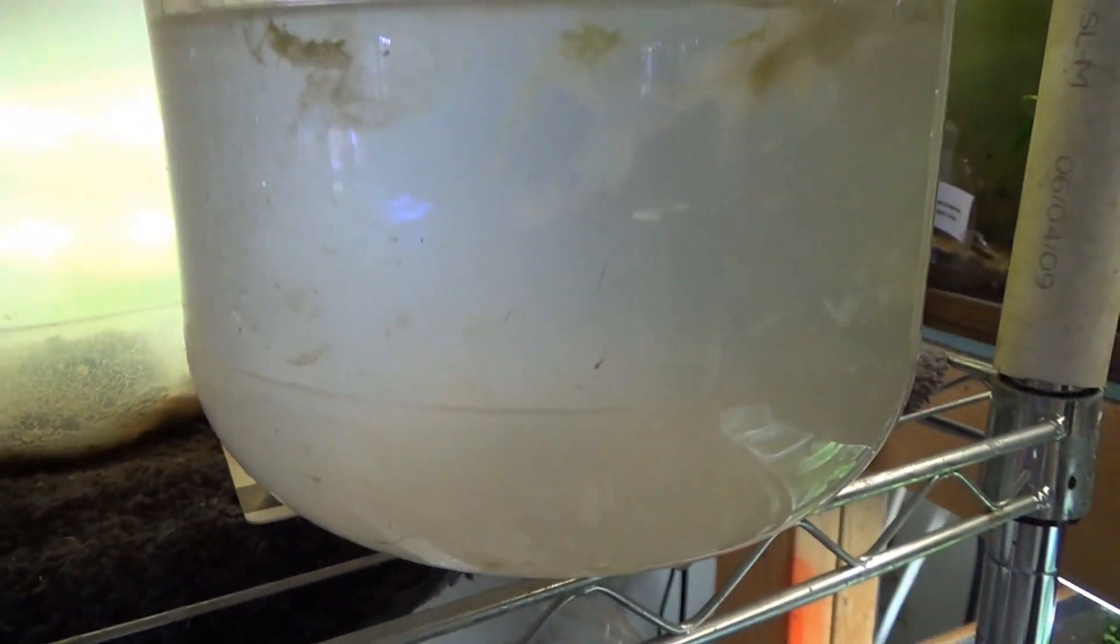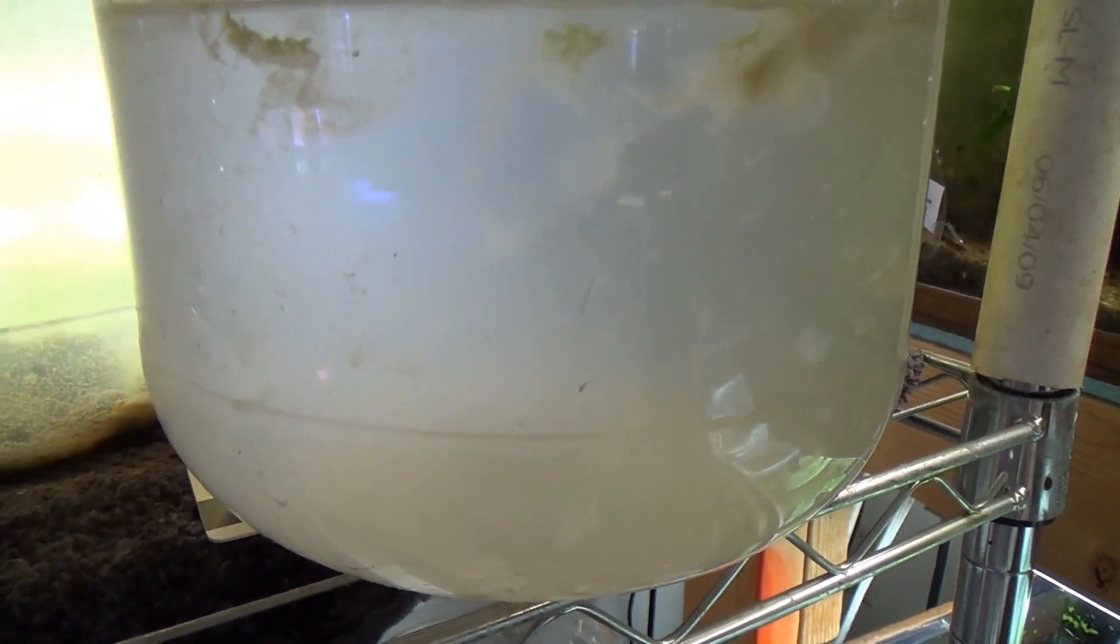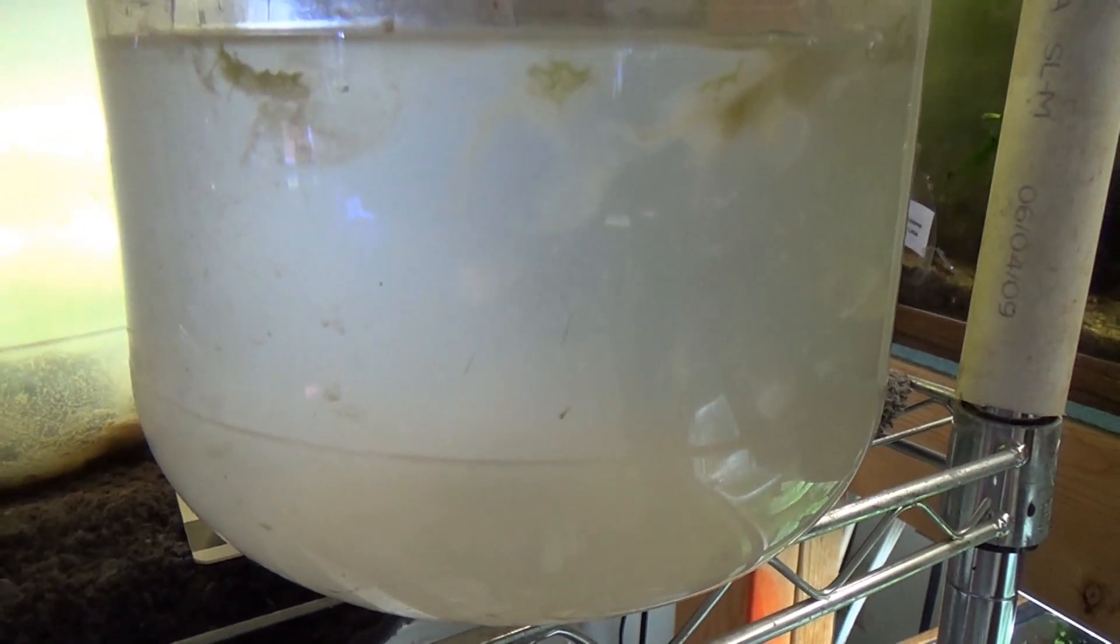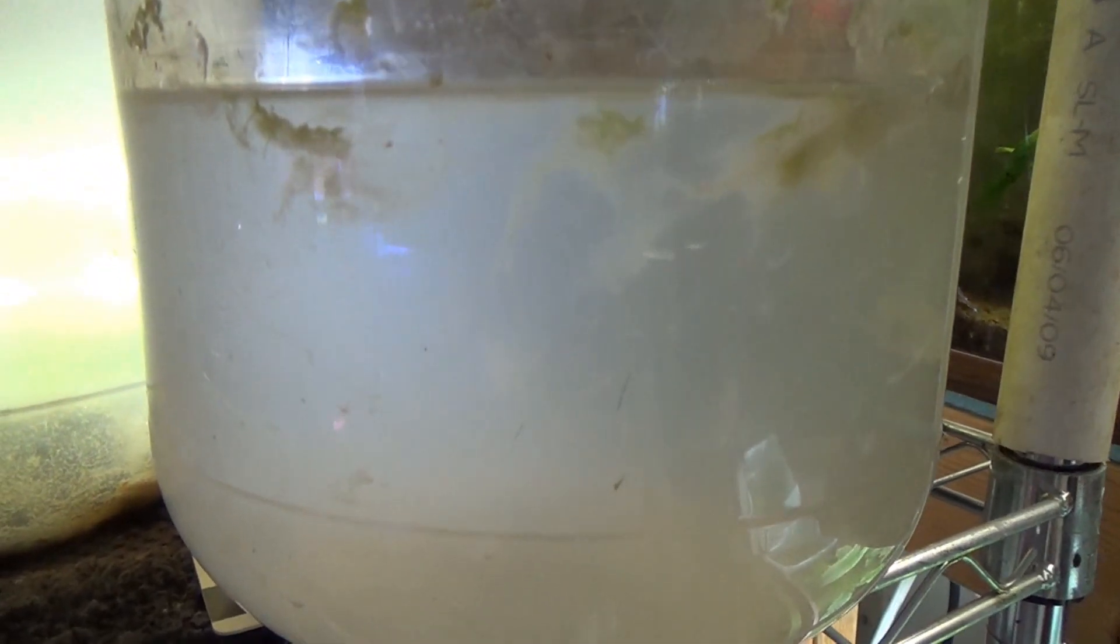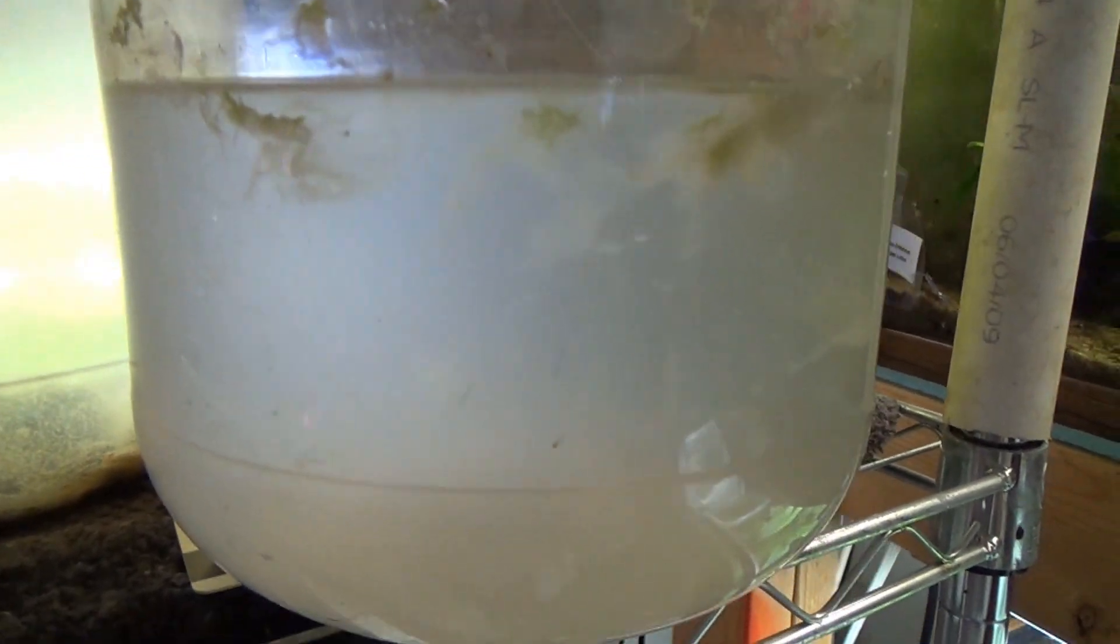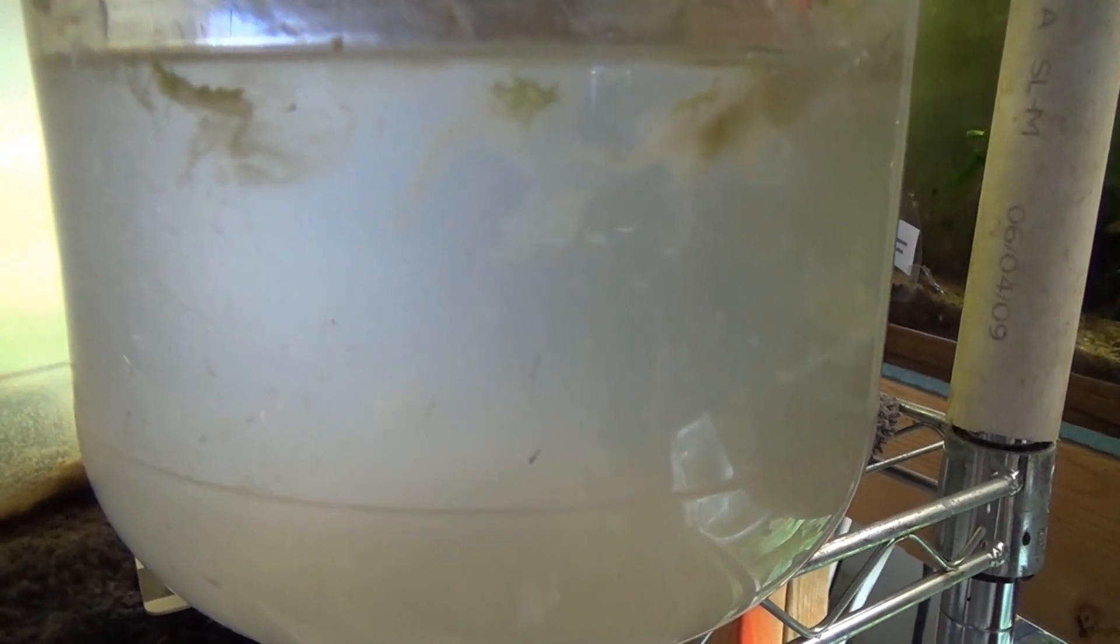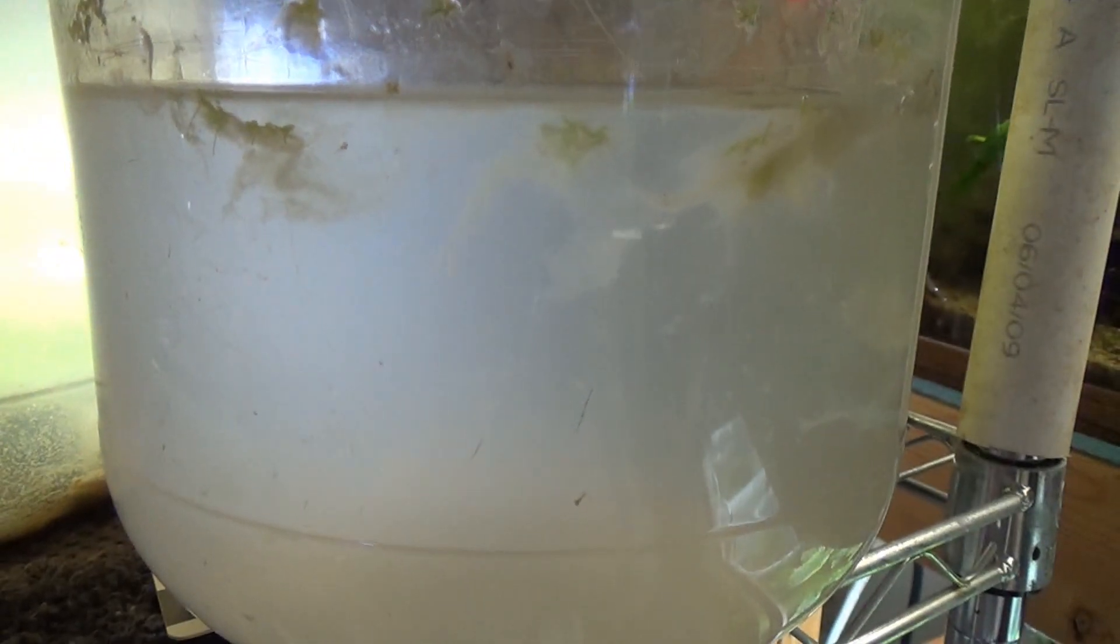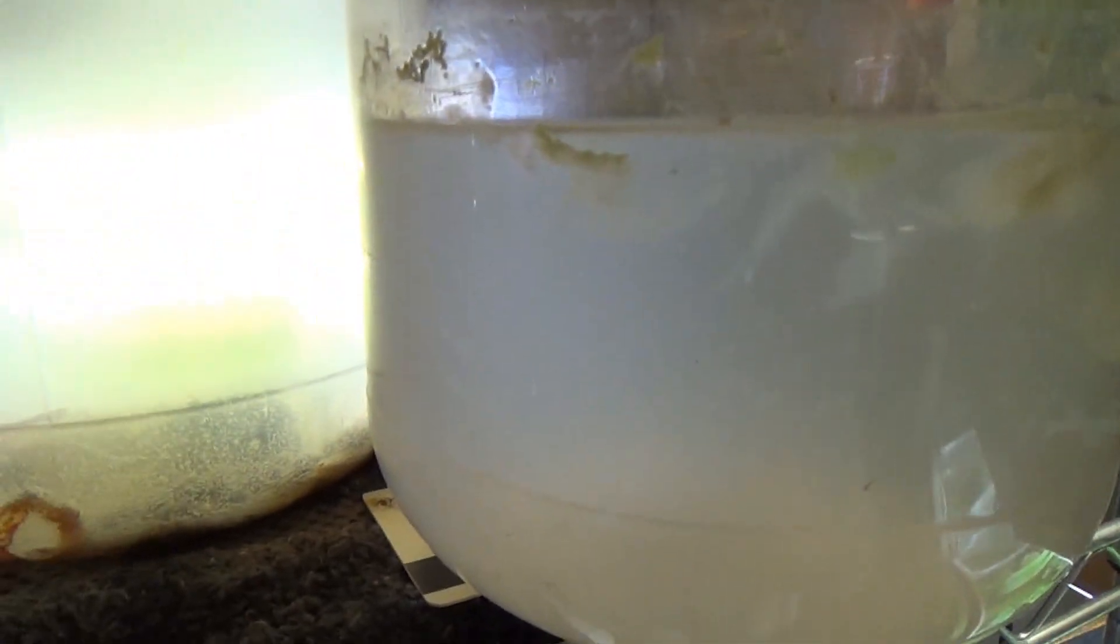So the alfalfa pellets seem to be the best material I've found so far for getting a nice month-long, long-term culture going of a ready supply of a variety of infusoria and paramecium to feed really small fish.